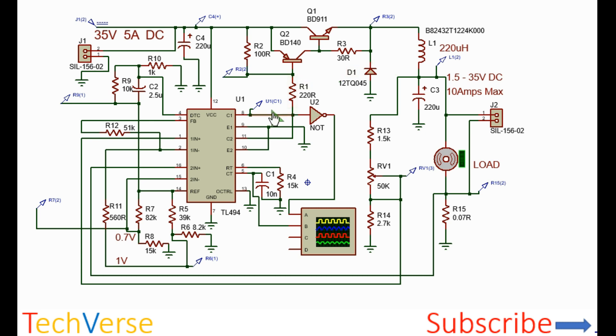When the output drivers turn off, the diode will conduct and allow current to continue flowing in the circuit. It's a classic DC to DC buck converter circuit.